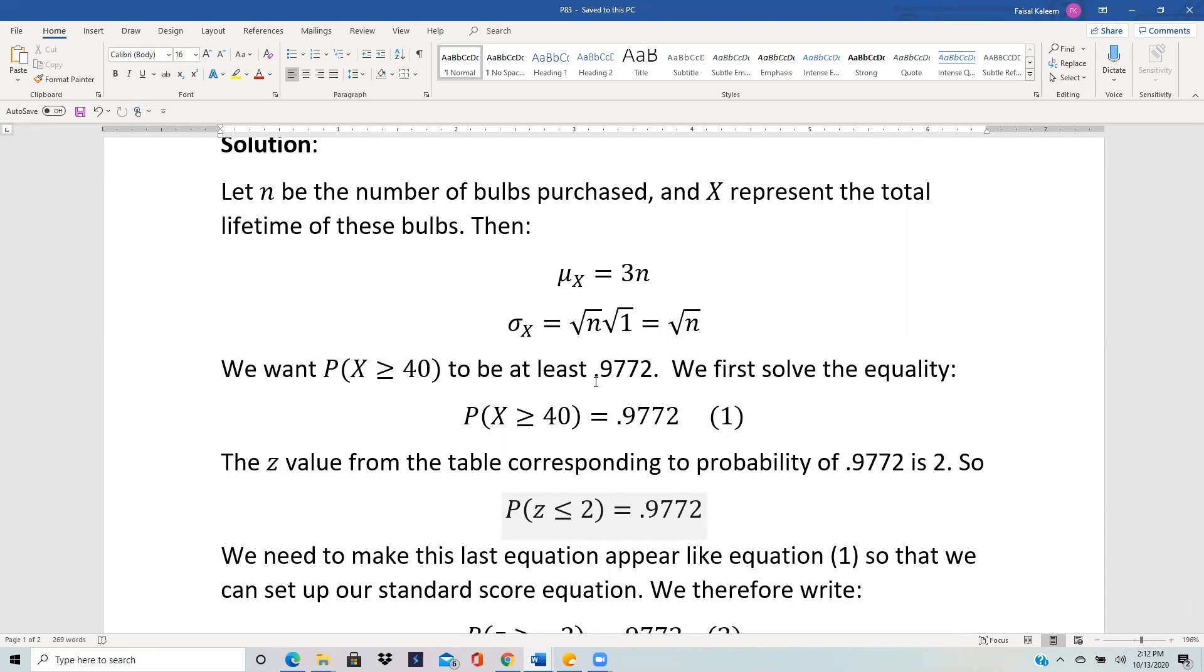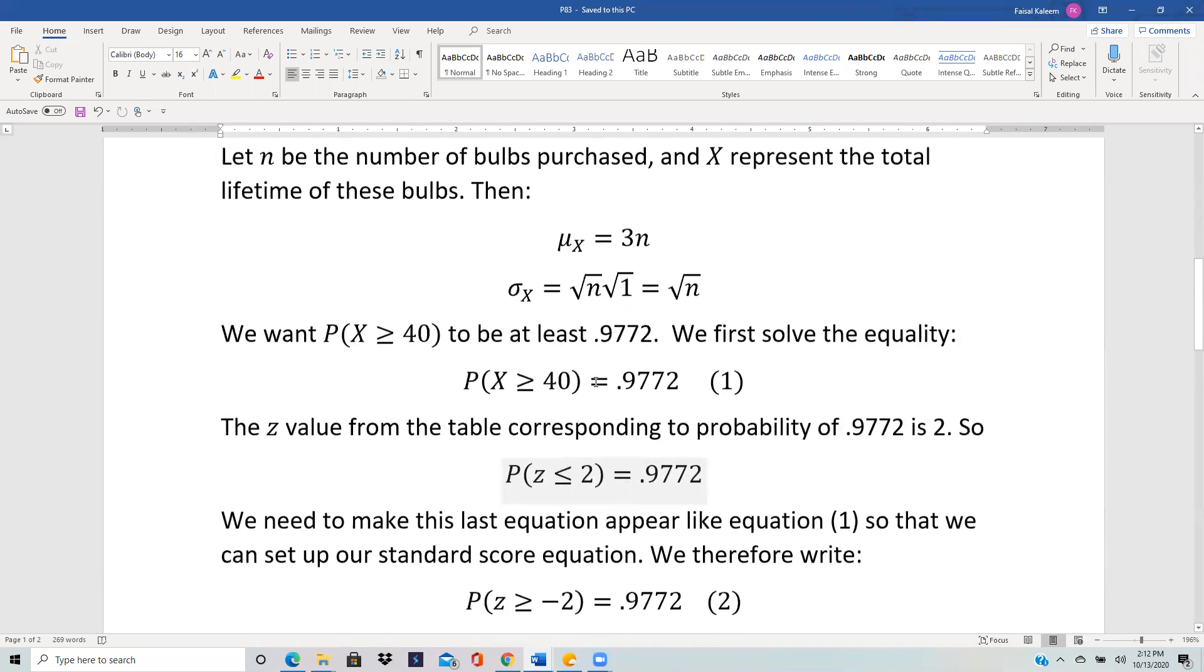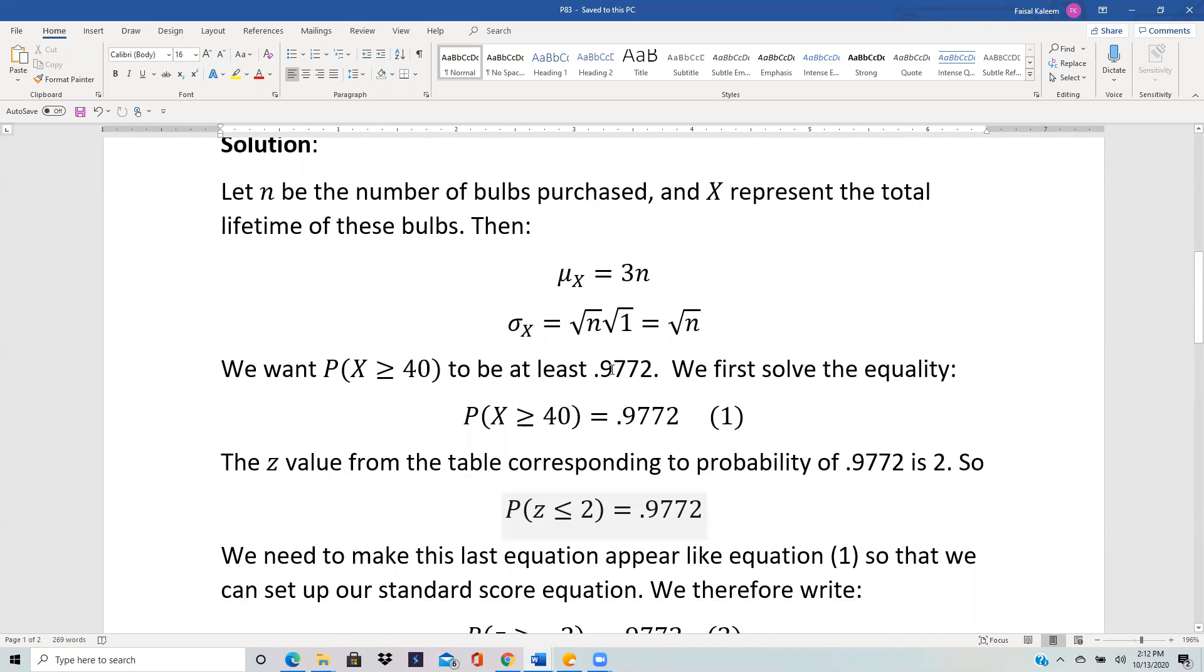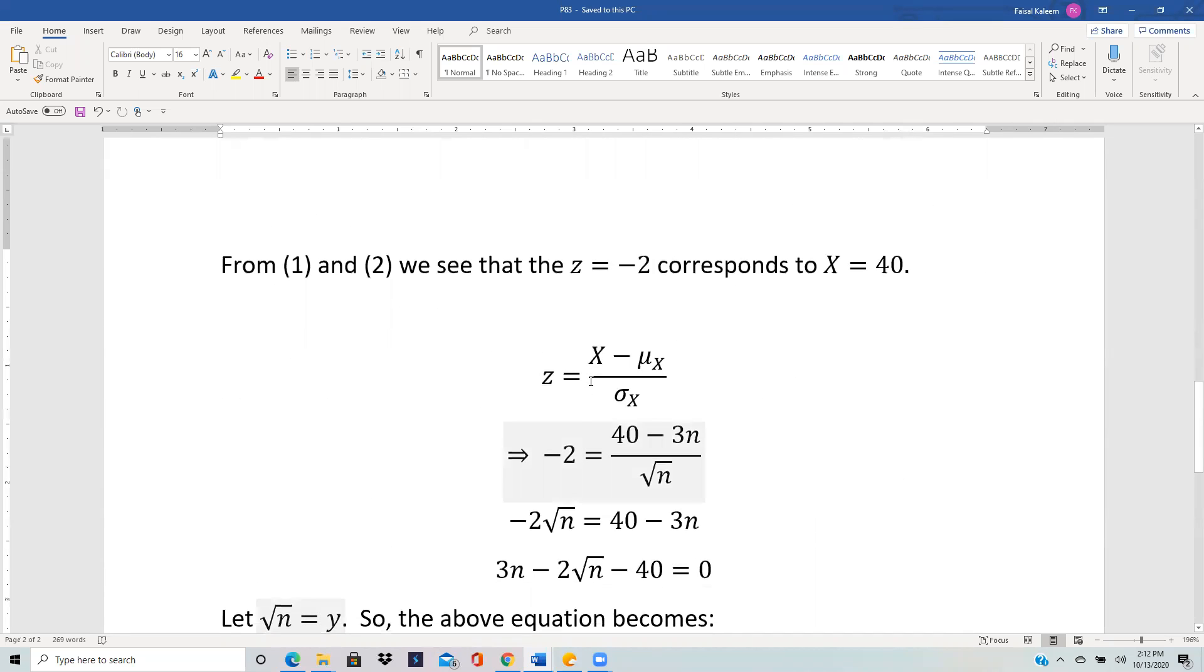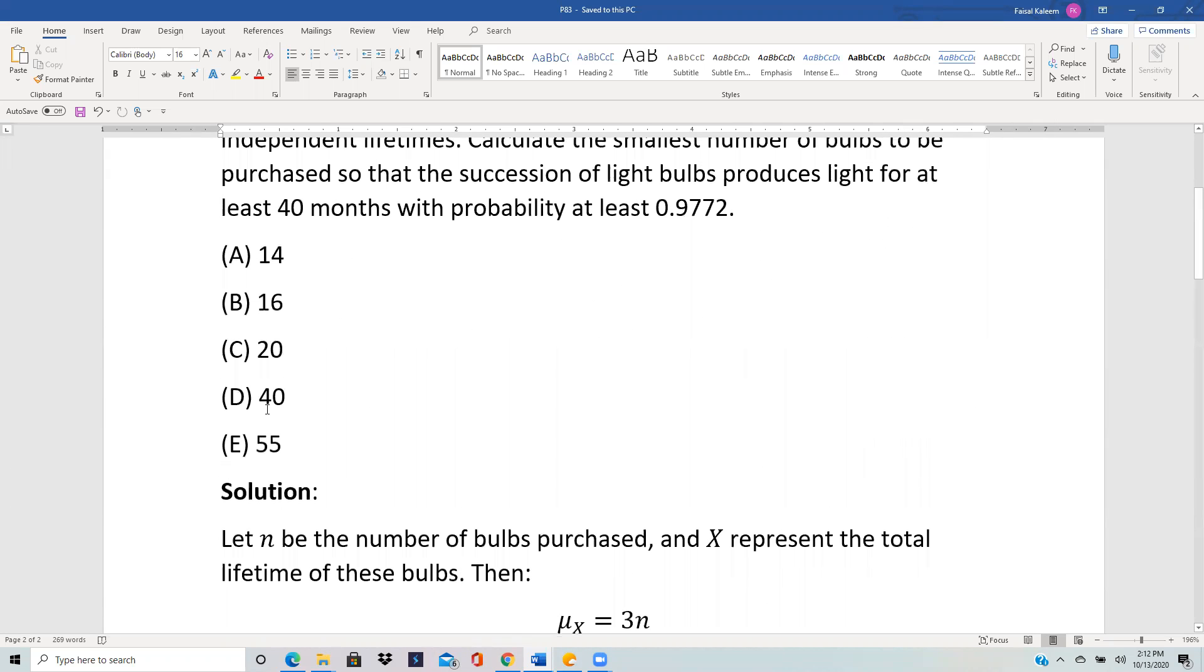So if you're asked the least number of bulbs, then 16 will do the job. You can't have lower than 16 because 16 gives the probability equal to this and we want to be equal to or more. More probability needs more bulbs, so the least bulbs you need is 16, and that was choice B.